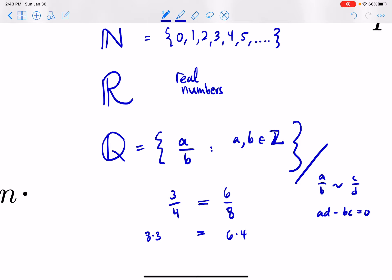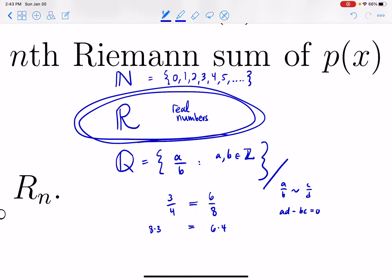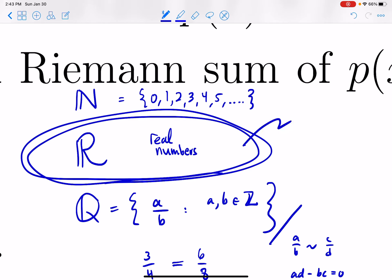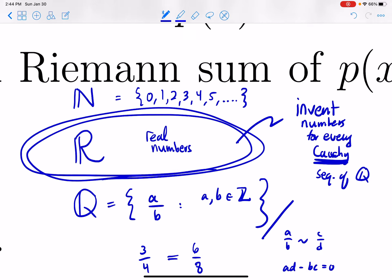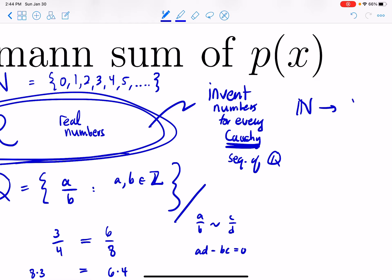But anyway, the real numbers are what we get when we invent numbers for every Cauchy sequence of rational numbers. Okay, so if I give you a sequence of rational numbers, meaning I give you a bunch of A sub n's where each A sub n is a rational number for every little n in the natural numbers. In other words, I give you a map into the rational numbers.